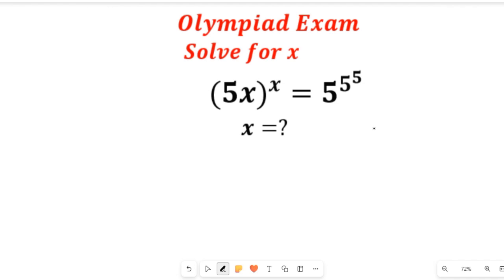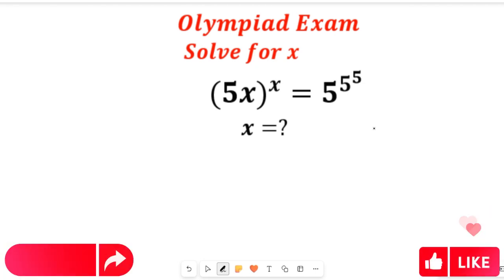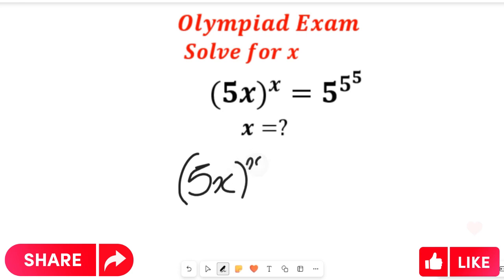Let us solve this cool olympiad mathematics problem. To solve this, we're going to take the fifth power of both sides, and if we do that we'll come to a logical conclusion. The left hand side will give us 5x to the power of x, all to the power of five, and the right hand side will be equal to five to the power of five, all to the power of five.